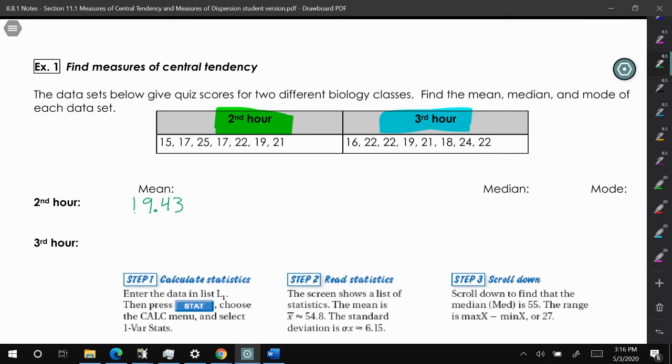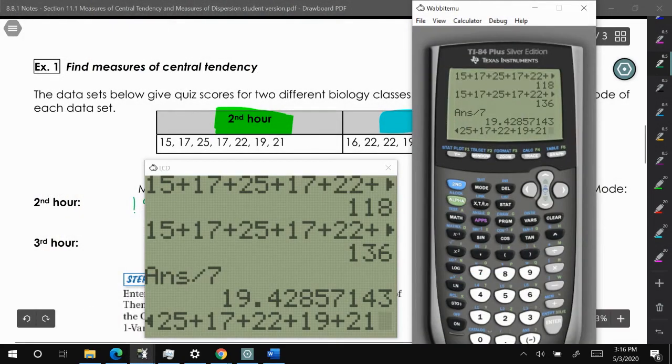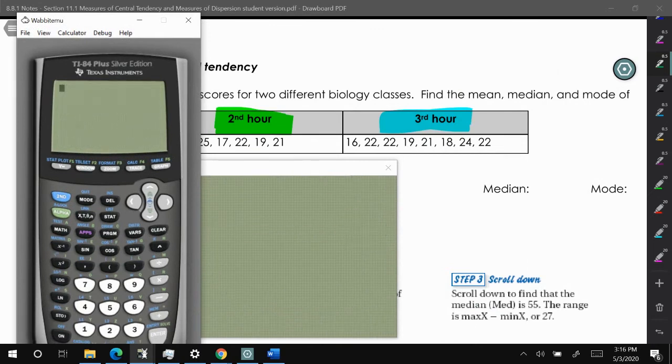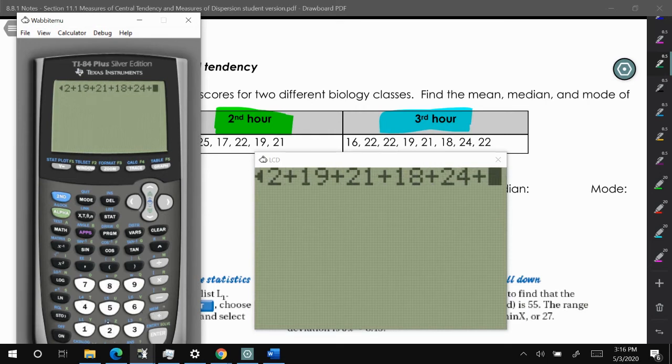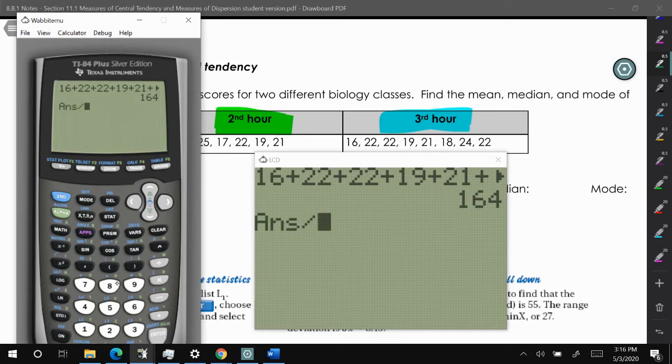Now we're going to calculate the mean of third hour scores. Same idea. I want to type these in, then I'm going to press enter after I'm done, and then divide by how many scores there were. There were 1, 2, 3, 4, 5, 6, 7, 8 scores. So 20.5.